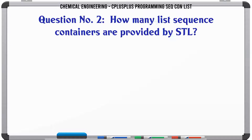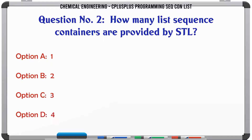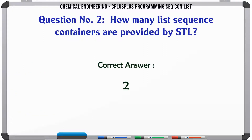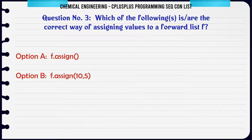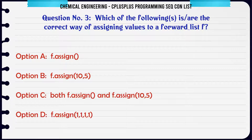How many list sequence containers are provided by STL? A. 1. B. 2. C. 3. D. 4. The correct answer is 2.